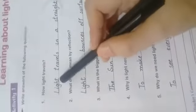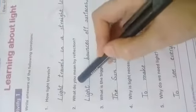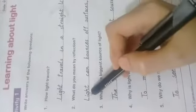Activity number one. Write answers of the following questions. How light travels? Read out after me. Light travels in a straight line.